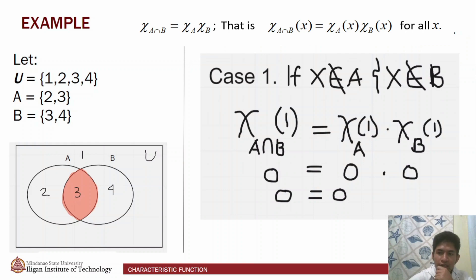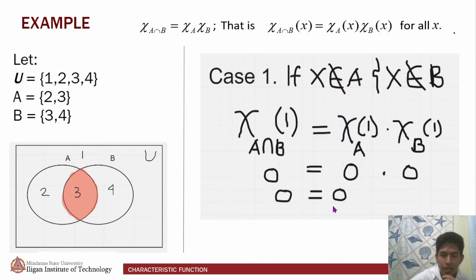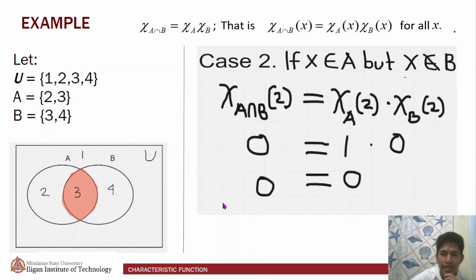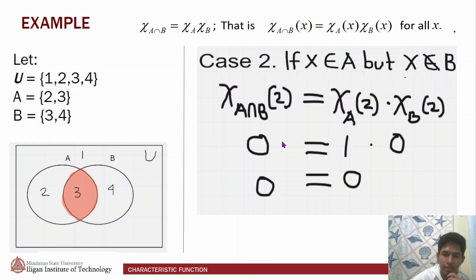For property 1, case 1: if x is not in A and x is not in B — referring to element 1 — the characteristic function of A∩B of 1 is 0, because 1 does not belong in the shaded region. The characteristic function of A of 1 is 0 because 1 does not belong in set A, and likewise, the characteristic function of B of 1 is also 0. Therefore, their product is 0 — true for case 1. Case 2: if x is in A but not in B — element 2 — the characteristic function of A∩B of 2 is 0. The characteristic function of A of 2 is 1, and the characteristic function of B of 2 is 0; therefore, their product is 0 — true for case 2.